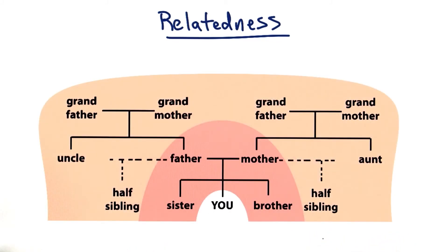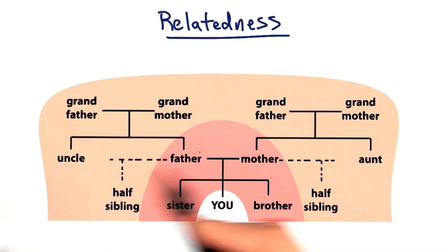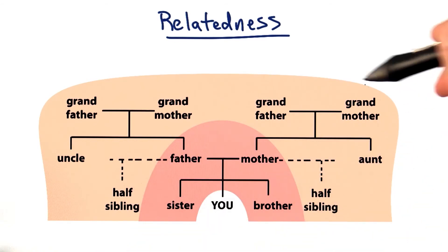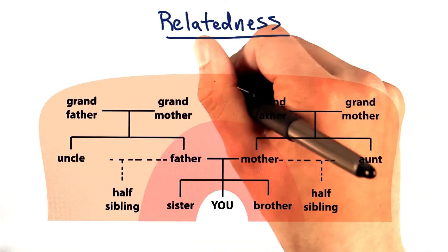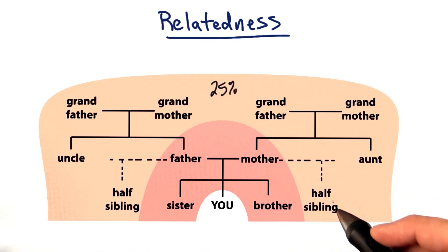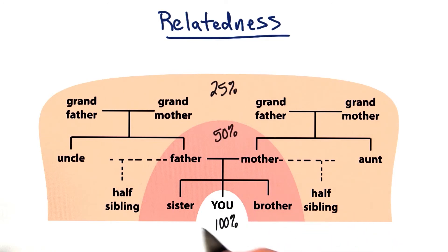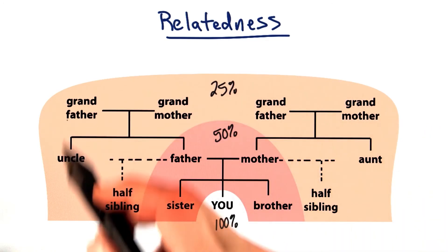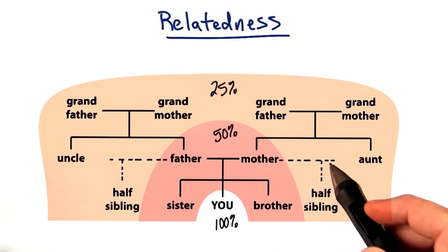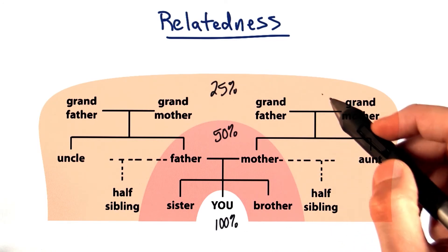Now let's add the first tier of complexity here. These would be considered your aunts and uncles. Your aunts and uncles and your parents all share parents themselves — your grandparents. This tier of relatedness is roughly 25% to you. This tier also includes relatives like half-siblings — a half-sibling is someone who shares one biological parent with you. When we added one tier of complexity, we got a lot bigger pretty fast, adding levels both in the same generation as you, the generation above you, and another generation beyond that.